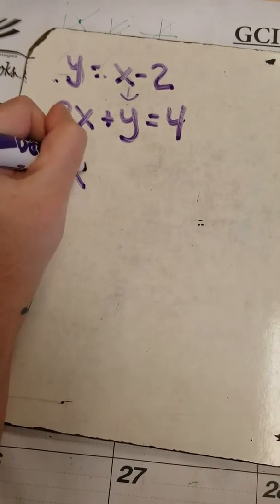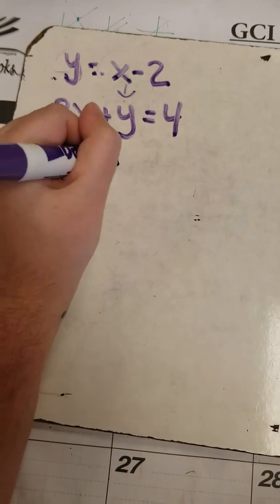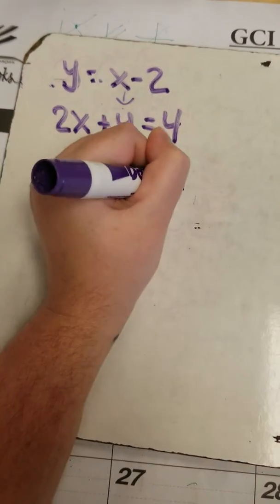So 2x, nothing happens to it, plus y. Well, what is y? It's x minus 2, equals 4.